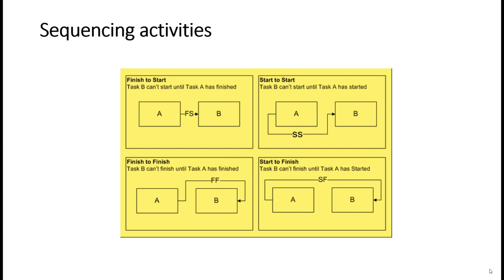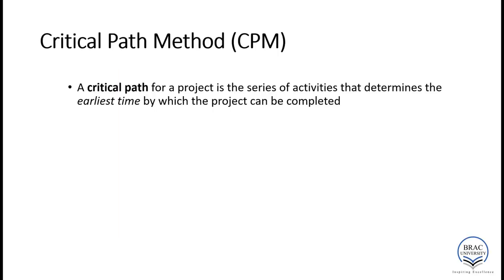Another very popular tool for project scheduling is CPM, or Critical Path Method. The critical path for a project is a series of activities that determines the earliest time by which the project can be completed. CPM determines the project duration by analyzing the sequence of activities that has the least amount of flexibility. This path — the critical path — represents the longest total time required to complete the project. All tasks that make up the critical path are called critical tasks.